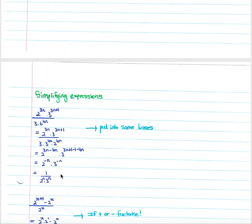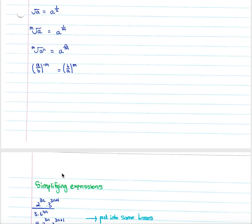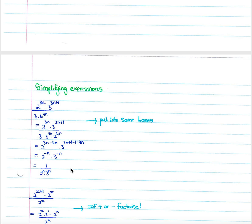Now that we have the laws and definitions covered, we move on to simplification of expressions. In an example you'd be given an expression and the first thing you should look for is getting everything into the same base. Here we can see we'll be working with twos and threes, since two and three are factors of six. We leave the terms already in base two and three, and break down the remaining term into a bracket of (two times three) to the four n, then distribute the four n to get three to the four n times two to the four n.